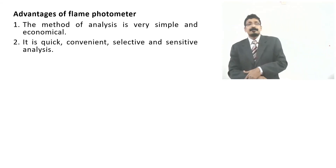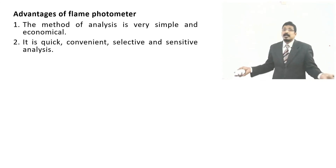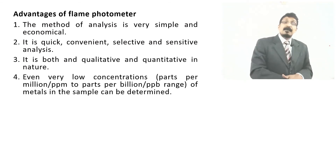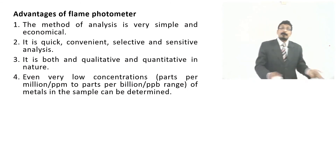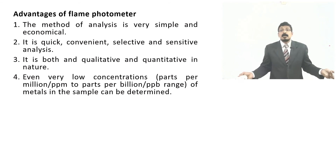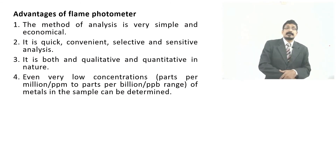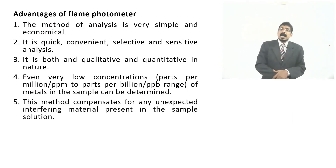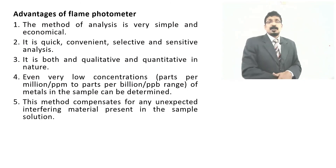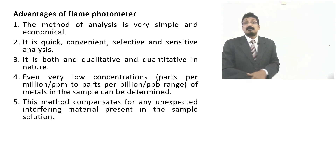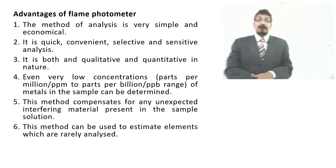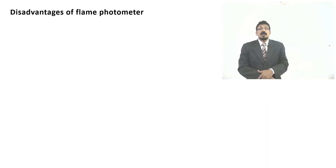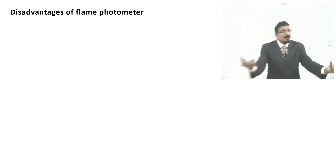Advantages of the flame photometer: the method of analysis is very simple and economical, quick and convenient, selective and sensitive — both qualitative and quantitative in nature. Even very low concentrations — parts per million (ppm), i.e., 1 µg/mL, or even parts per billion — of metals can be determined. This method also compensates for any unexpected interfering materials present in the sample solution, and can be used to estimate elements that are rarely analyzed by other methods.